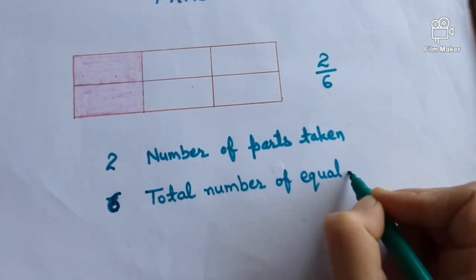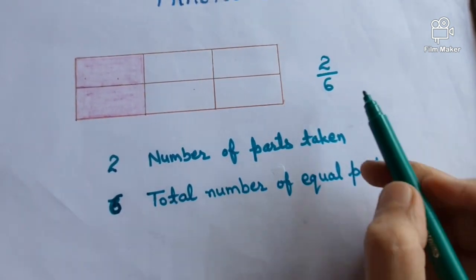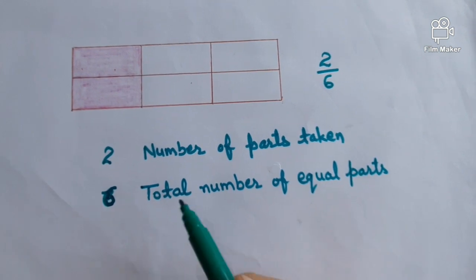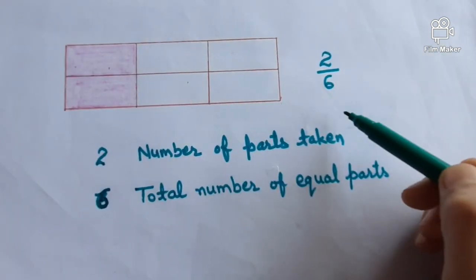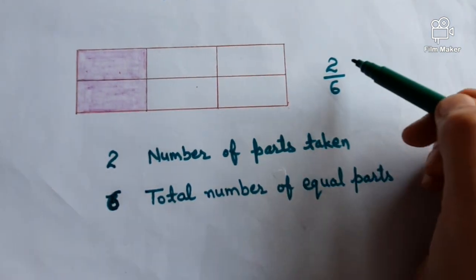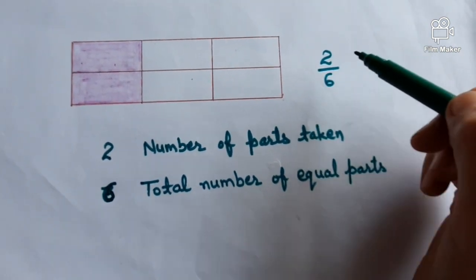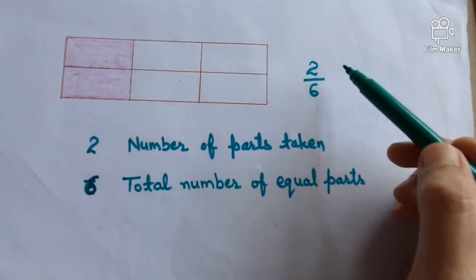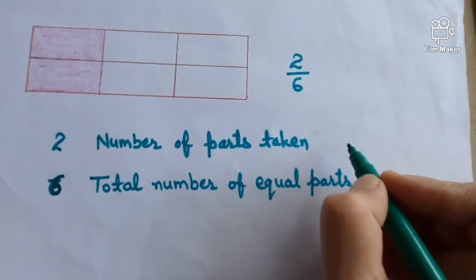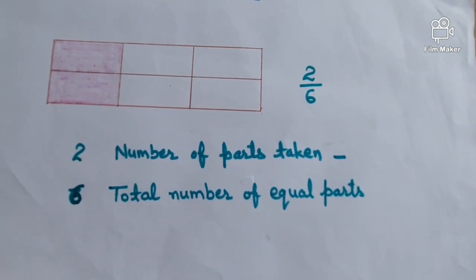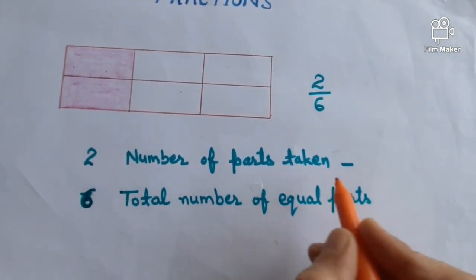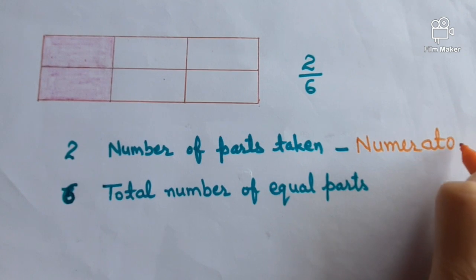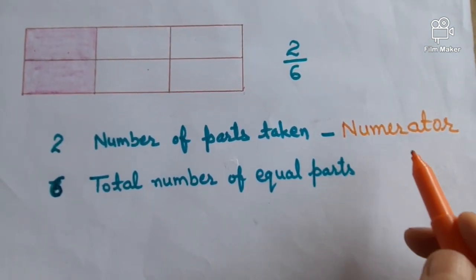Now we have some terms that we use for these numbers. We write two on the top and six on the bottom. Two is the number of parts taken or number of parts shaded. The number of parts taken that we write on the top is called numerator. It is called numerator.